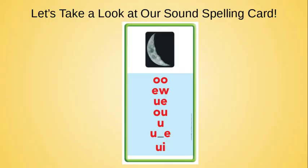Let's start by taking a look at our sound spelling card. There's a picture of a moon. Do you hear the ooo sound in moon? M-oon. Moon. Do you know which spelling pattern is in moon? O-o, because it's spelled M-O-O-N. Moon.